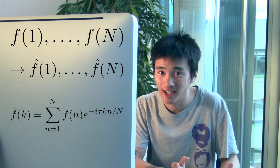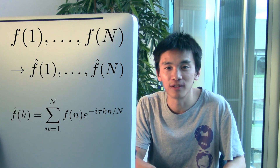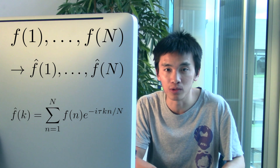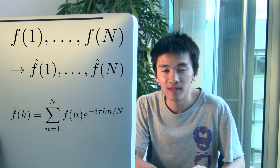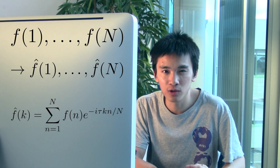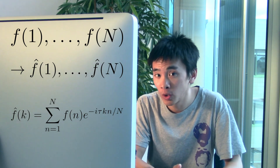Thus, a naive implementation of the discrete Fourier transform will require an n-squared computation time. It's not slow, but it's not fast. If n is about a billion, which corresponds to gigabytes of data, this will take years to perform on a laptop like mine.